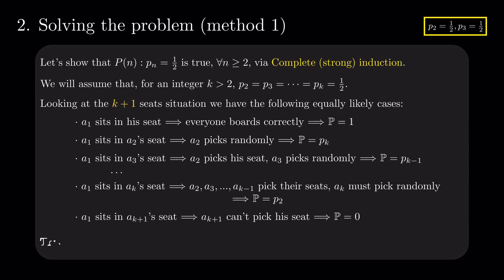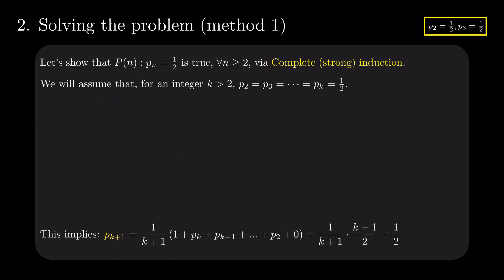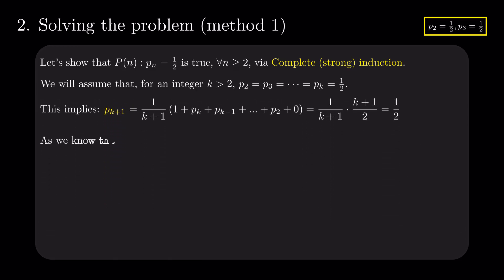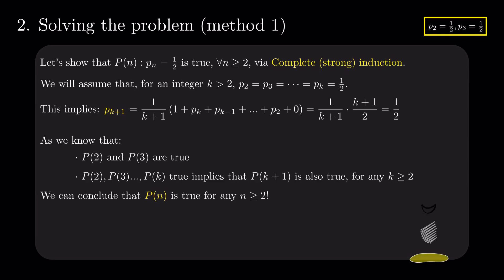Averaging over all the equally likely cases, we get that Pk+1 is 1 over 2 as well. Using the principle of mathematical induction, we can conclude that our statement is true for any n. Hence, the probability that the last passenger will fly in his own seat is 1 over 2.